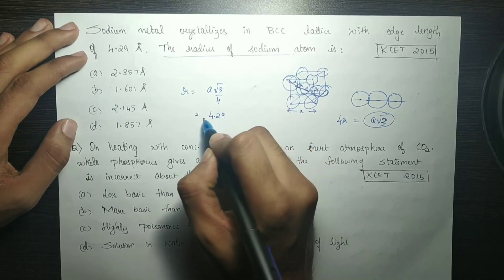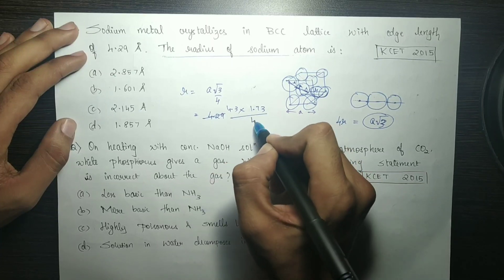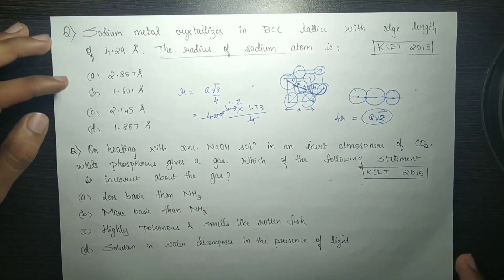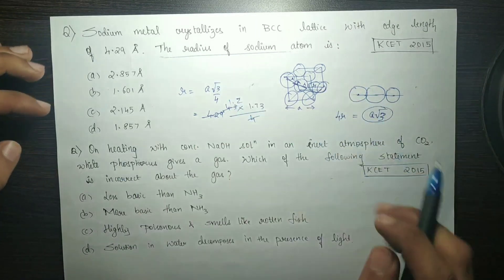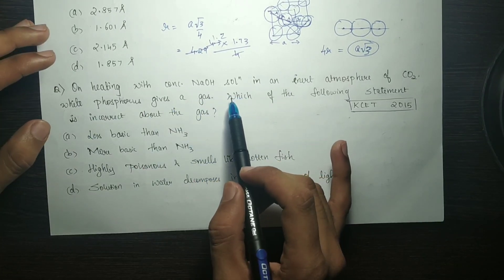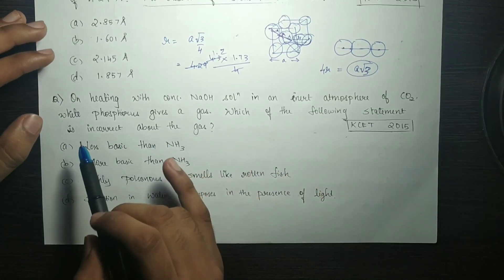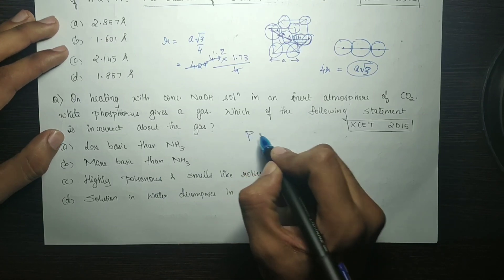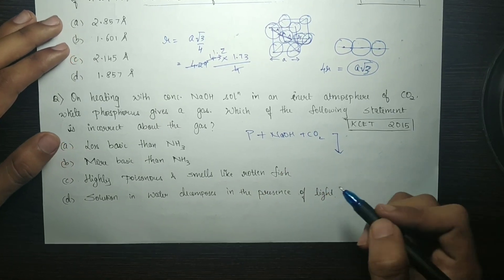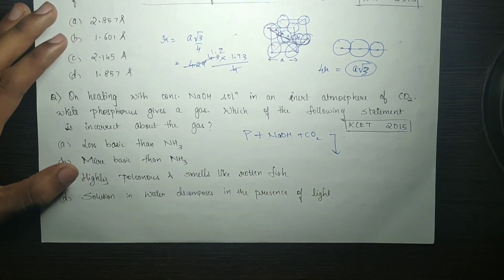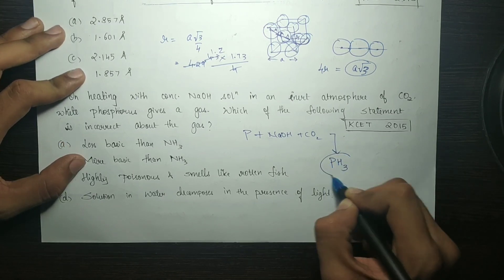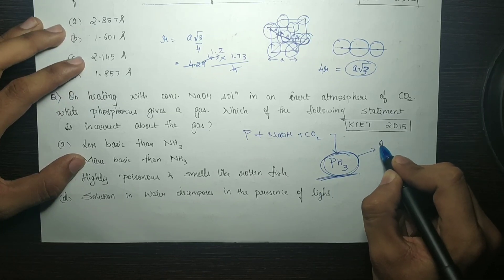A is equal to 4.29, approximately 4.3. So we apply: R equals 4.3 multiplied by 1.73 divided by 4, giving approximately 1.86 angstroms. Moving to the next question: if you want to call it, it's phosphine.